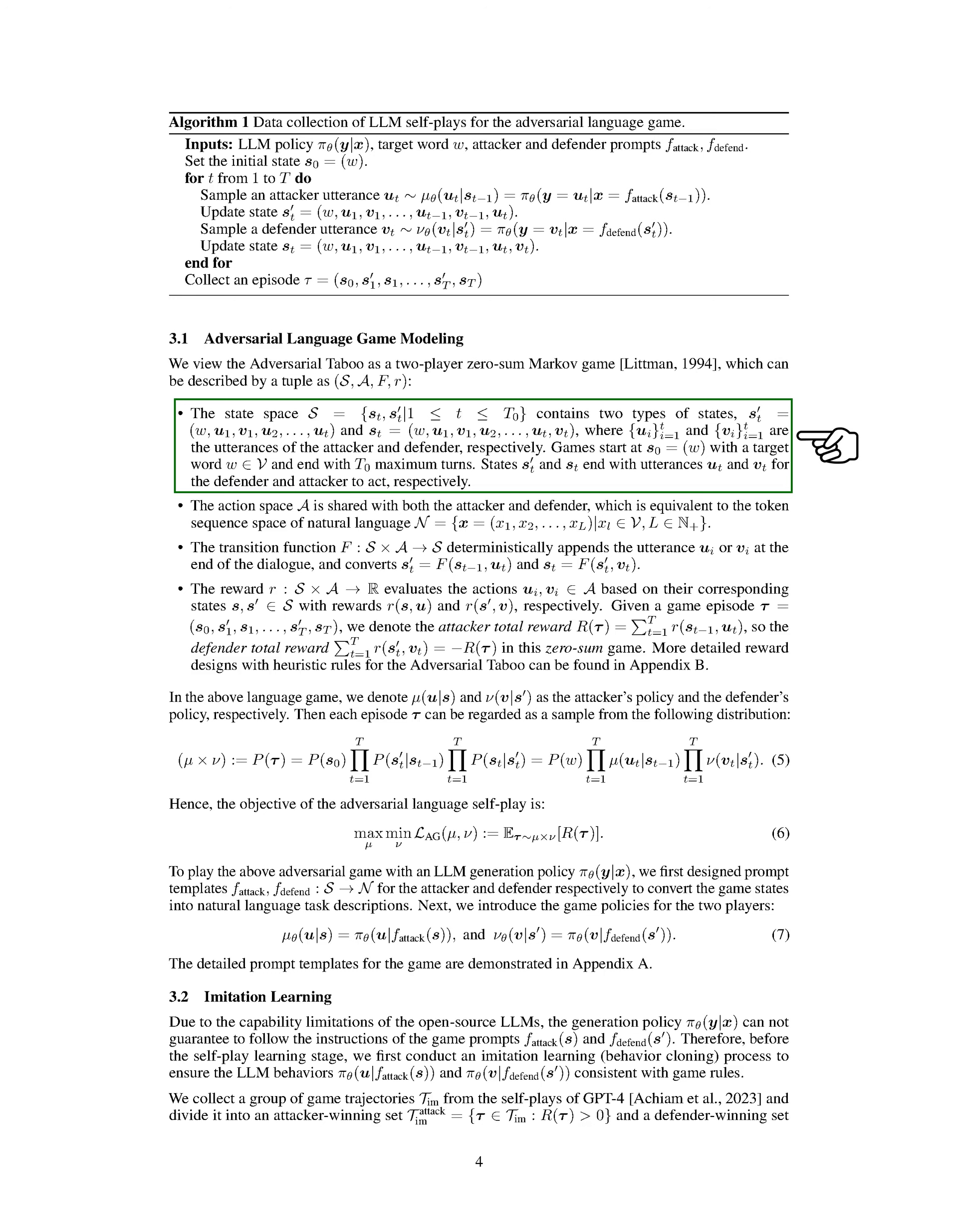We model the adversarial taboo game as a two-player zero-sum Markov game. The game is defined by a tuple containing the state space, action space, transition function, and reward function. The state space consists of states representing the dialogue between the players, starting with the target word and ending after a certain number of turns.